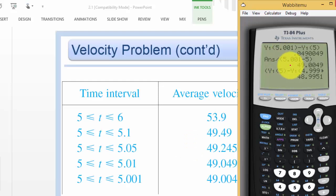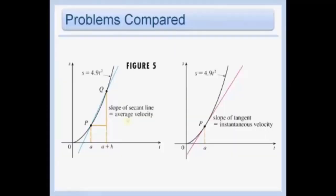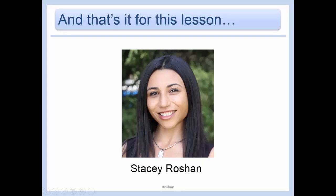Let's quickly look at what this means graphically. This is really a summary of what we've been doing: we've been taking the slope of the secant line — that's our average velocity between two points — and using it to approximate the slope of our tangent line, which is our instantaneous velocity. That's the key takeaway: the slope of the secant line is average velocity, and the slope of the tangent line is instantaneous velocity. And that's it for this lesson.